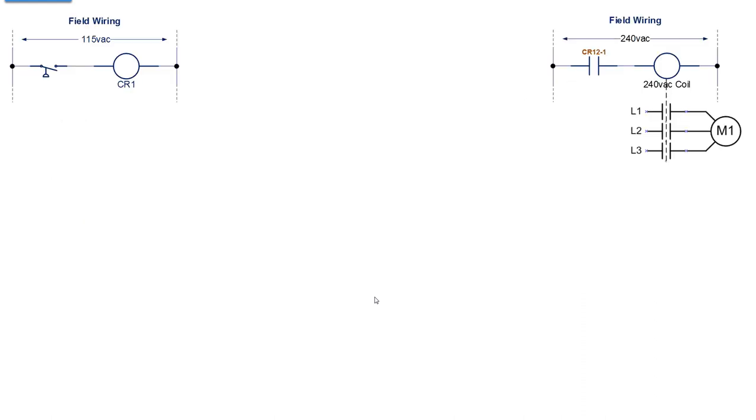Let's take another example. Here's our field wiring. We have a pressure switch. That pressure switch operates on 115 volts AC in the field, it energizes a contact relay CR1. On the output side we have field wiring, we have 240 volts AC. Somewhere there's a relay CR12 that will control this contact, and when this contact closes it will energize that coil, and will close three contacts that supply three-phase power to the motor.